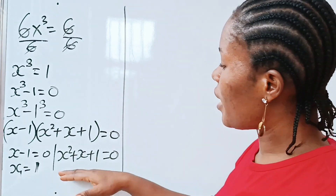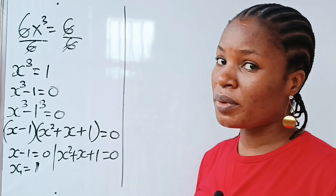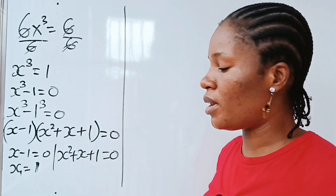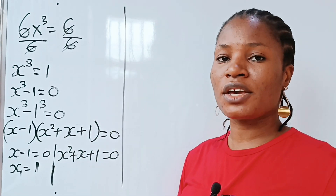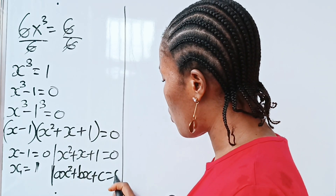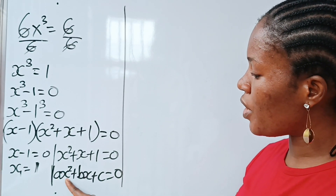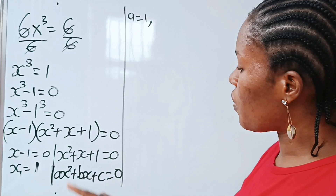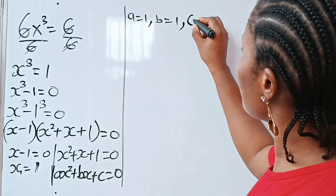Now let's solve for the rest. Looking at this equation, we cannot solve x squared plus x plus 1 equals 0 using the factorization method. Rather, we are going to use the quadratic formula. The standard form is ax squared plus bx plus c equals 0. From here, a is the coefficient of x squared, so a equals 1. Our b is also 1, the coefficient of x, so b equals 1. And our c is also 1, so c equals 1.